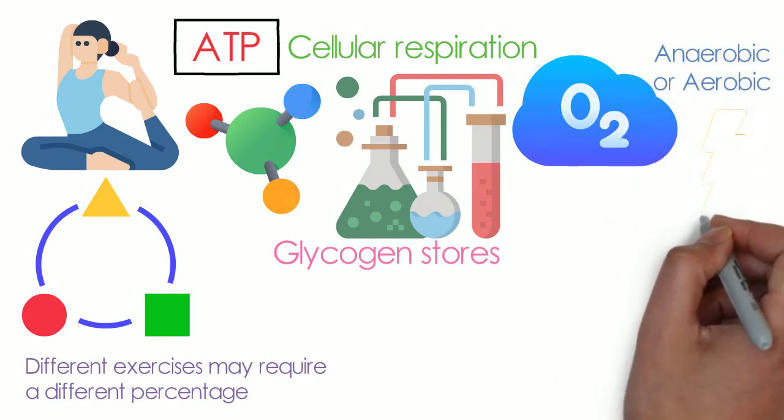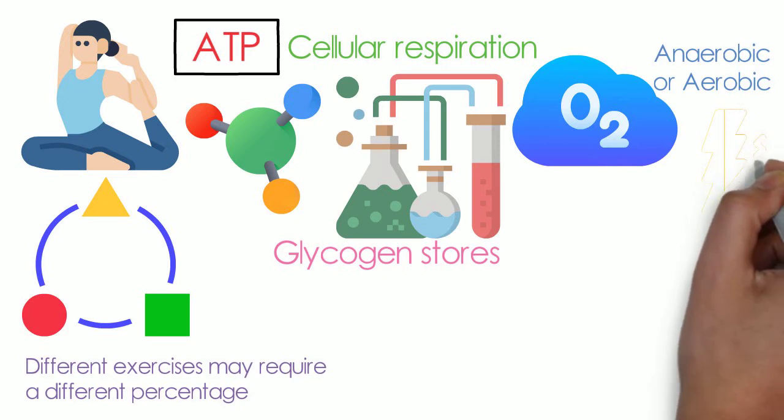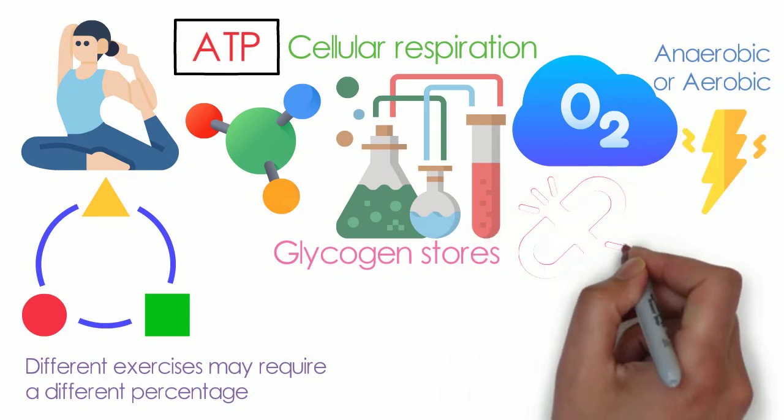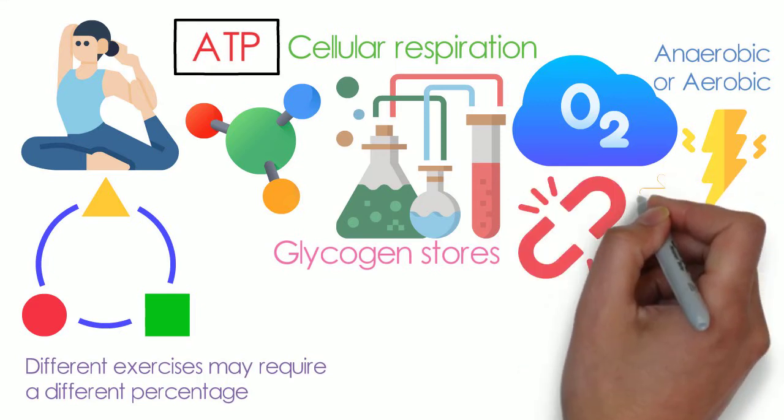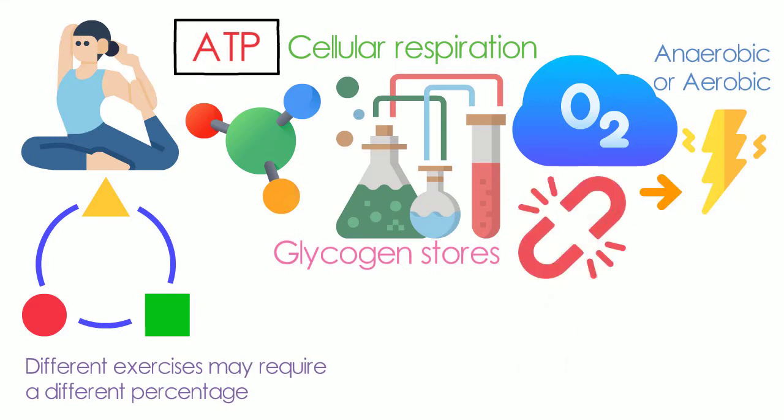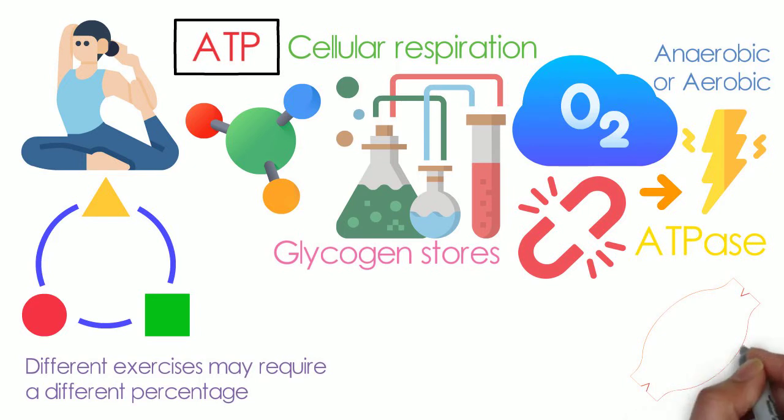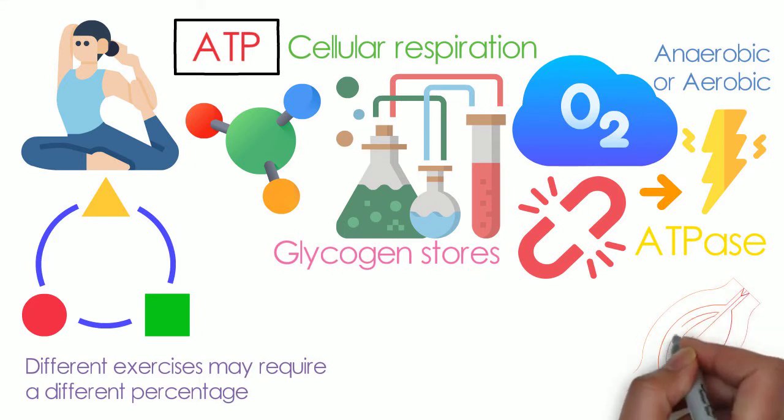ATP provides energy through the breaking of the covalent bond that holds the last phosphate group to the rest. The bond is easily broken. Hence, much more energy is released than was needed to break the bond. Enzyme ATPase is responsible for breaking the bond, releasing energy for muscle activities.